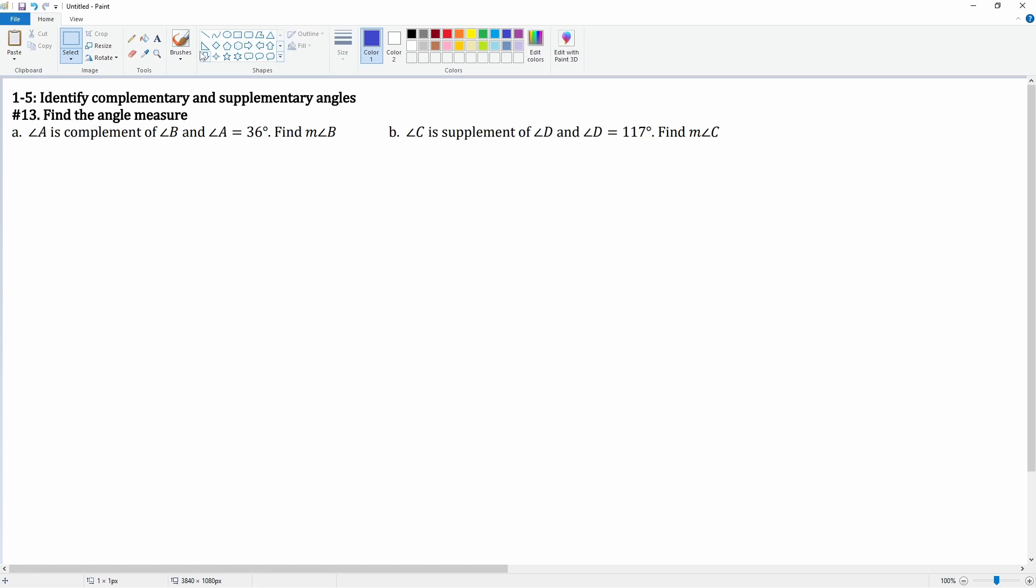We know that complementary angles make 90 degrees, so we can draw the angle here at 90 degrees.